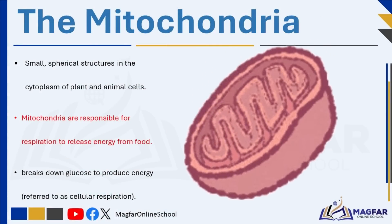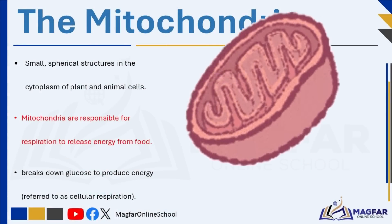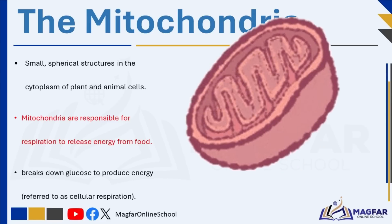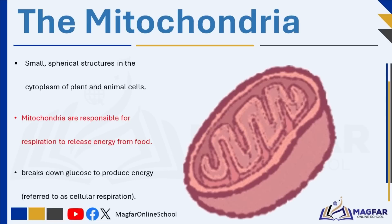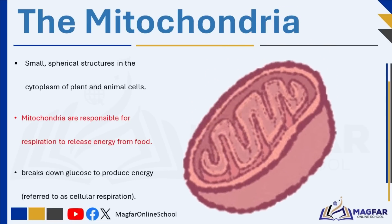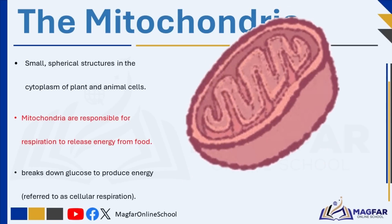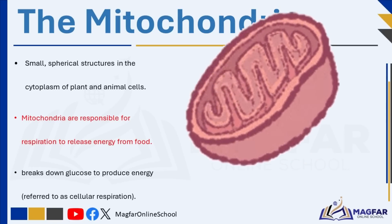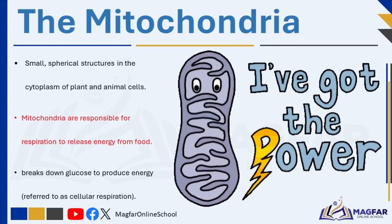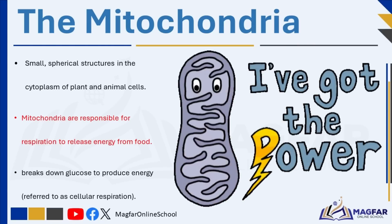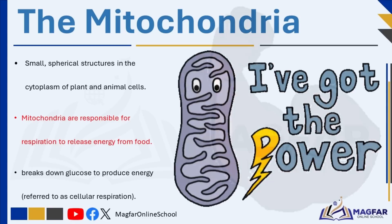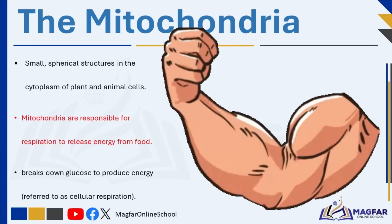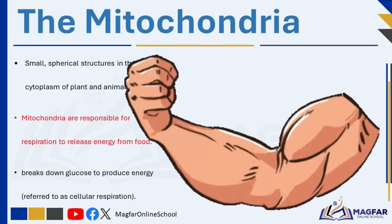Mitochondria are small, spherical structures found in the cytoplasm of both plant and animal cells. They play a crucial role in providing energy for the cell. Often called the powerhouse of the cell, mitochondria are responsible for cellular respiration — a process that breaks down glucose from food to release energy. This energy is essential for the cell to carry out its life processes. The number of mitochondria in a cell depends on its function; for example, muscle and liver cells contain a large number because they require more energy.